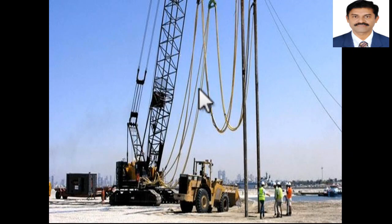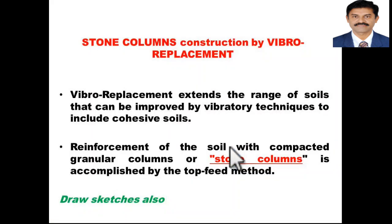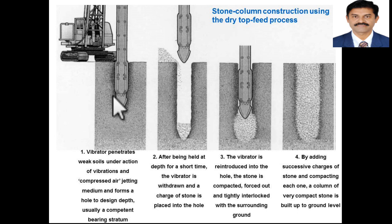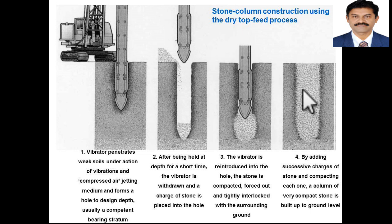This is another photograph showing the entire machinery, with the probe inserted into the soil. A stone column is constructed using the Vibroreplacement technique. In Vibroreplacement, the range of soils that can be improved includes cohesive soils. Reinforcement of the soil with compacted granular columns or stone columns is accomplished by the top feed method. You can see here the same procedure is adopted and a stone column is constructed.